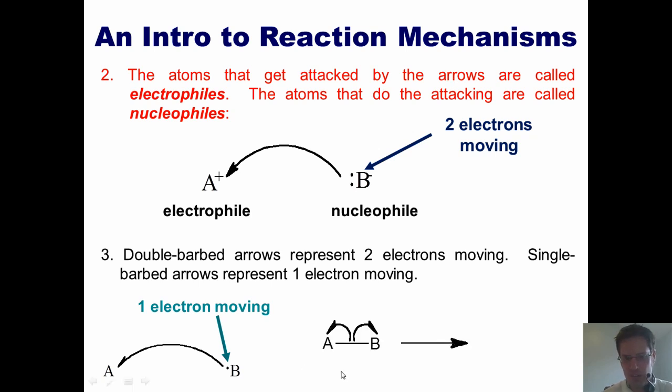Classic example is this. A bond between A and B, where I've got a single barb going in each direction, represents each of these atoms taking one of these two electrons and walking away.